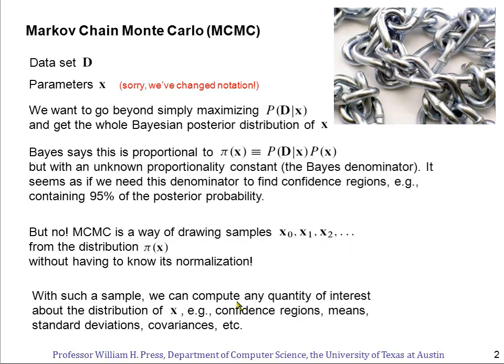If we have such a sample of the posterior distribution of the parameters, we can compute any quantity of interest that we want. For example, we can just see where those samples fall over a long period of time and find a region that contains 95% of them, and that would be our estimate of the 95% confidence region. Or we could simply compute the mean values of all of these samples and get the mean of the parameters, standard deviations, covariances, essentially anything that we want.